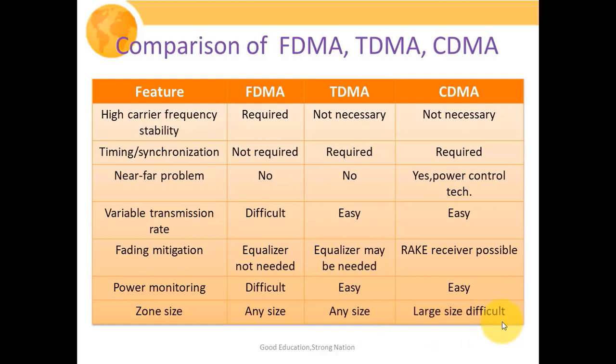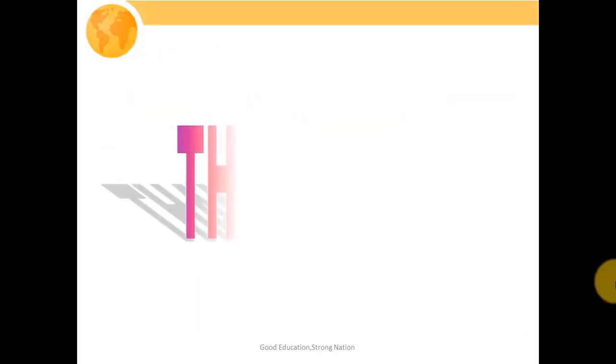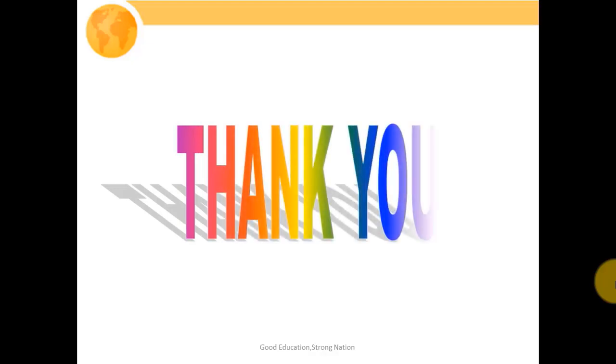This is all about FDMA, TDMA and CDMA. Hopefully you have gained insight about code division multiple access and its various features, and understood the comparative analysis among FDMA, TDMA and CDMA. In case of any doubt you can ask in the comment section and I will try to solve them as soon as possible. These are the references. Thank you very much for your patient hearing.